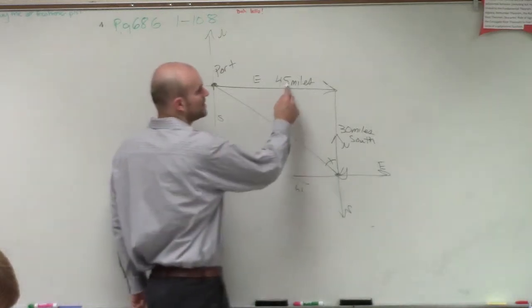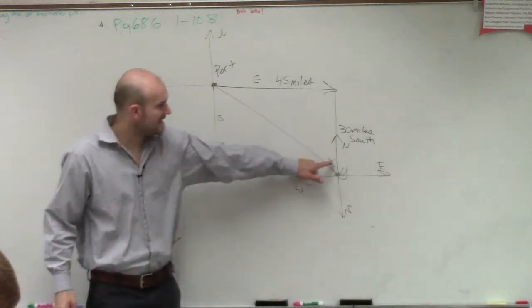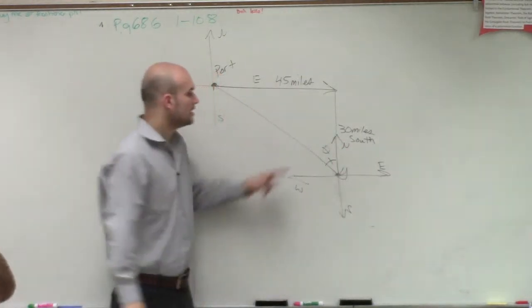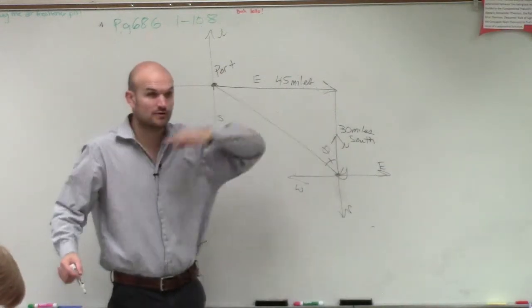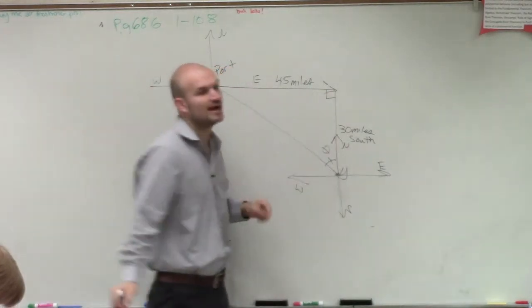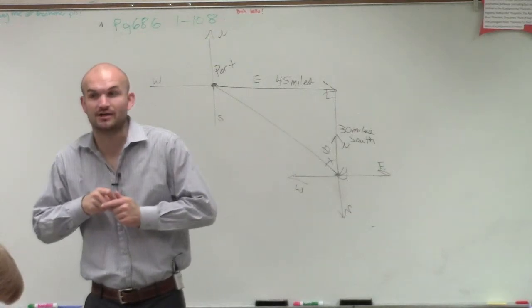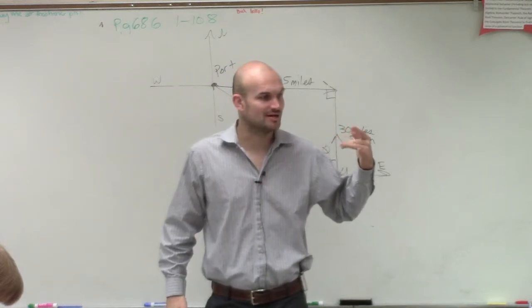Now the only thing we know is we have 45 and we know 30. So let's call this angle theta. For this angle, how do these two relate? Now we do have a right triangle. If you go directly east and then you go directly south, you have now created a right triangle. There's two things that we've talked about in this class. If we have a right triangle, what theorem can you use with the right triangle?